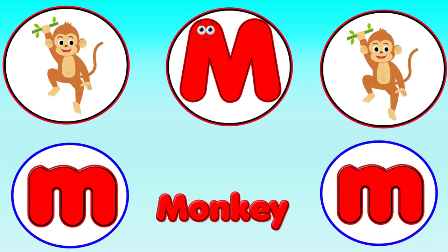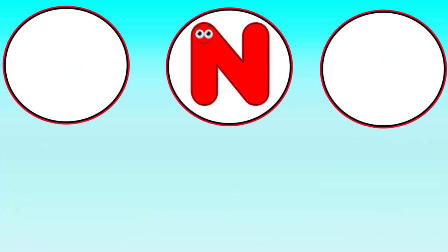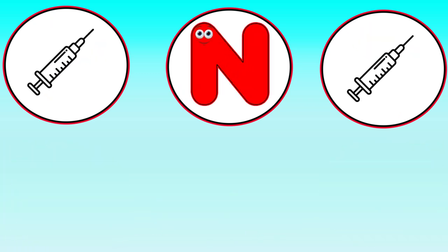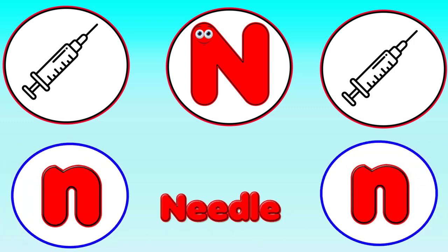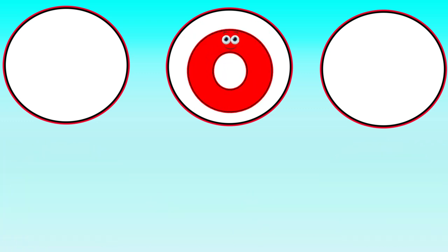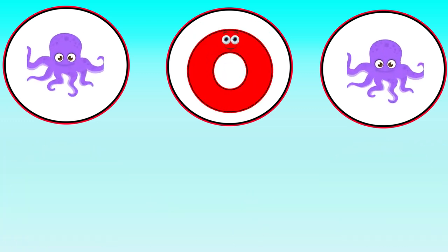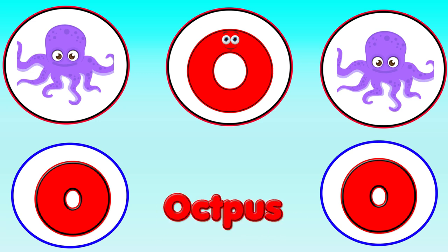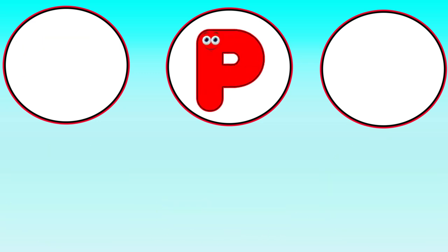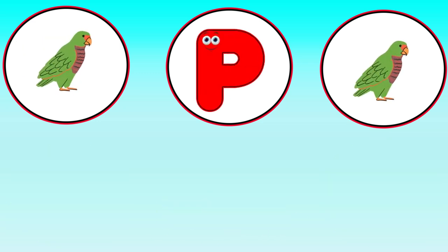M is for Monkey. Ma, Ma, Monkey. N is for Needle. Na, Na, Needle. O is for Octopus. A, A, Octopus.